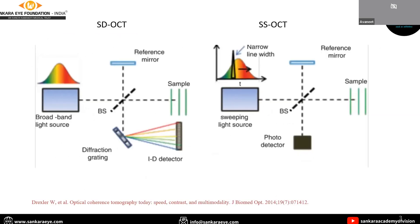That was time domain OCT. In spectral domain OCT, the point detector is replaced by a spectrometer, and there is no need for mechanical scanning of the optical path length. In swept source OCT, the broad bandwidth light is replaced by a narrow linewidth source which sweeps over different wavelengths.